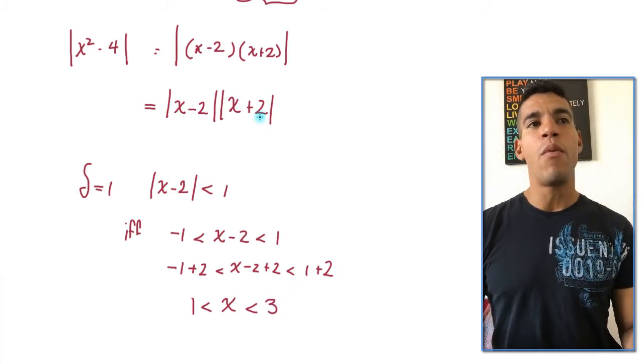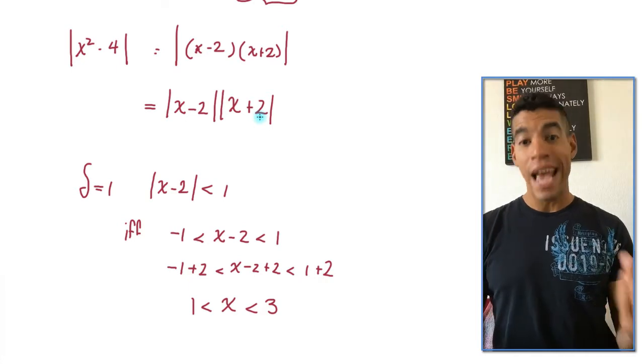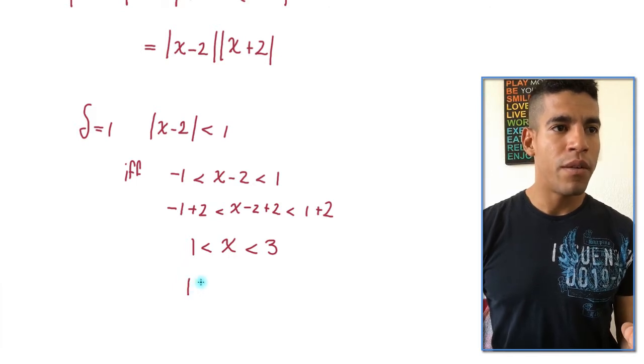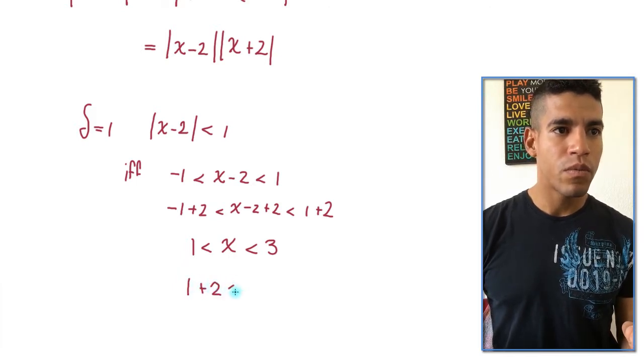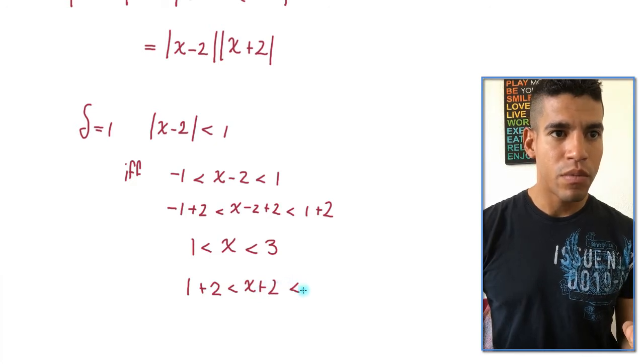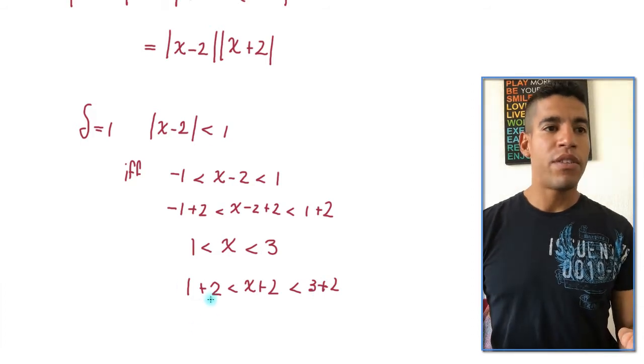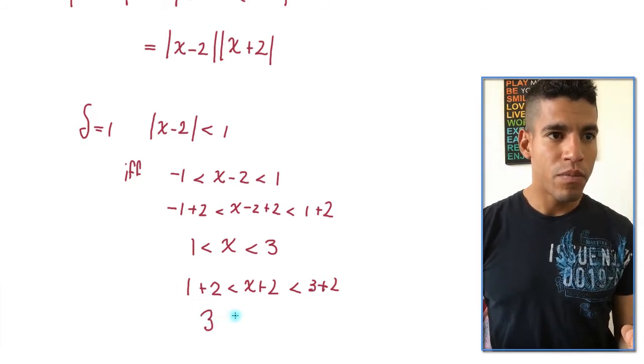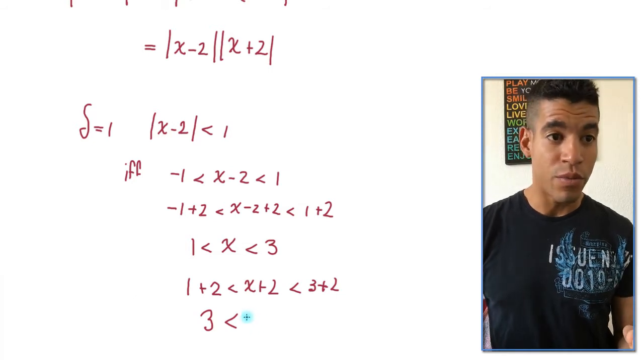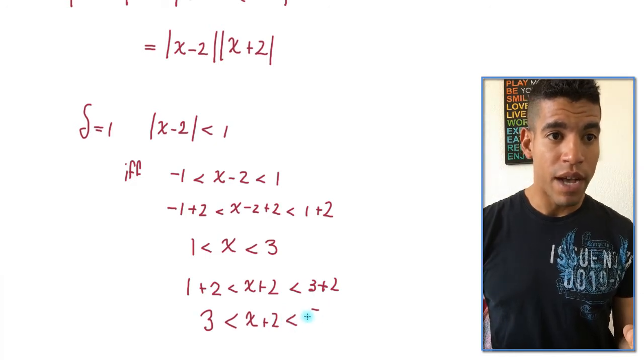But now I want this expression. I want x plus 2. So now I have to add 2 again to get x plus 2. So I'm going to do that. So 1 plus 2, x plus 2, then 3 plus 2. So now 1 plus 2 is 3. x plus 2 is x plus 2, which is what we want. And then 3 plus 2 is 5.